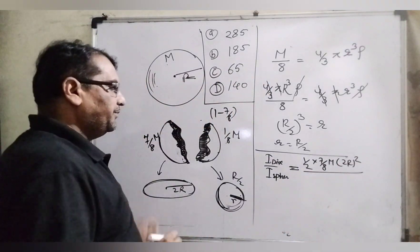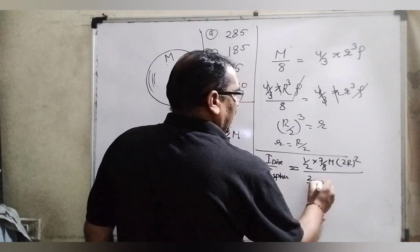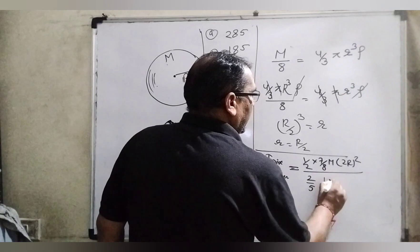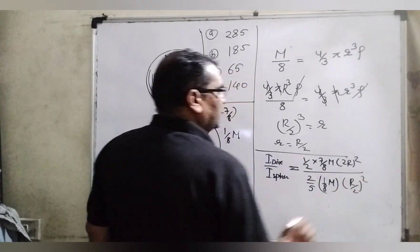And for the sphere: 2/5 M. What is M? Mass is 1/8 M. And what is the radius? R/2 whole squared.